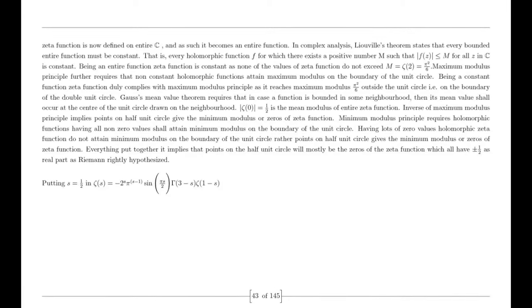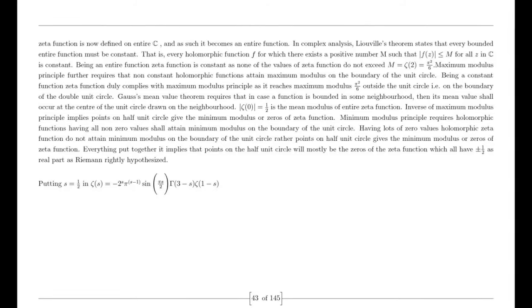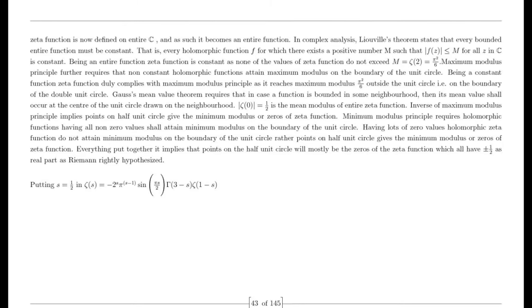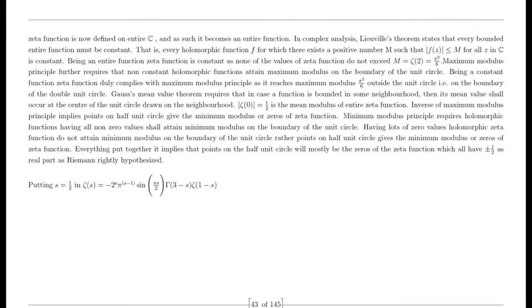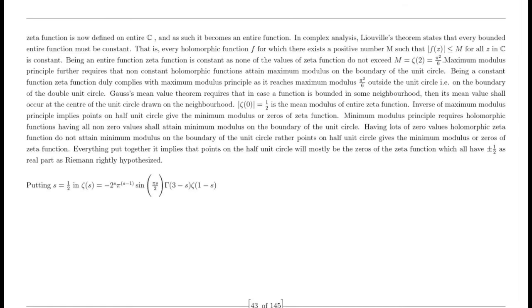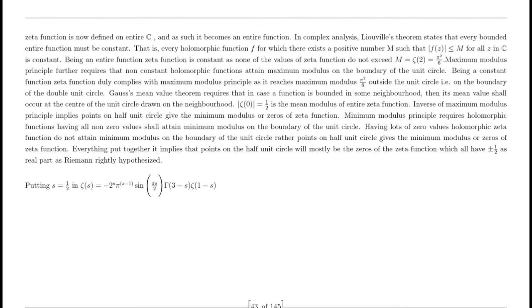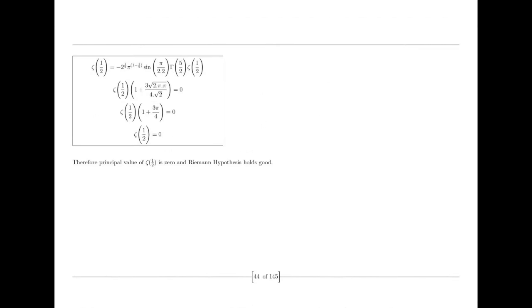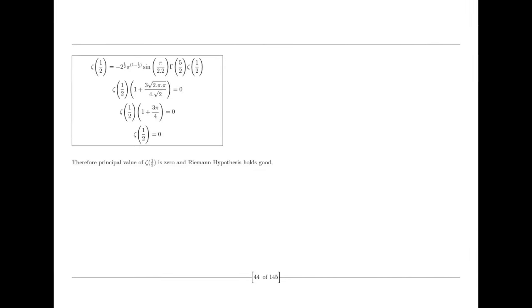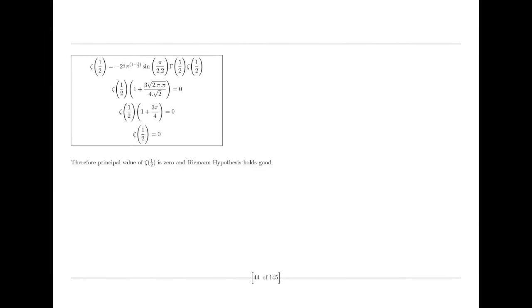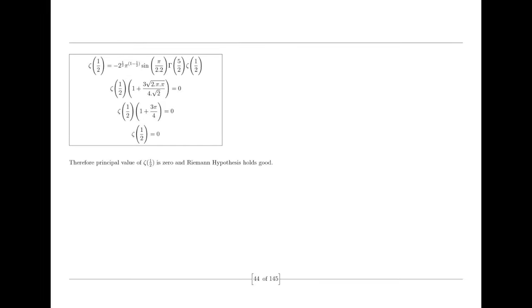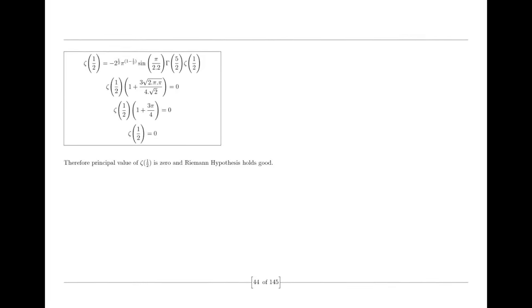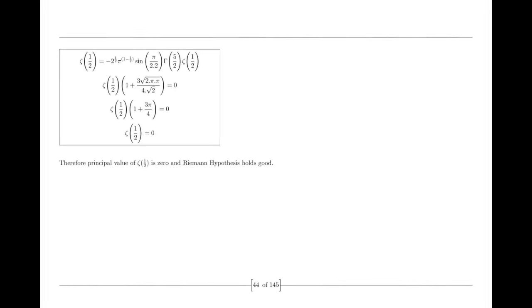Moreover, the integration of imaginary numbers with the real number line could have implications for quantum error correction codes, which protect quantum information from decoherence and errors. The mathematical framework underlying error correction codes would likely continue to rely on complex numbers, ensuring the reliable storage and manipulation of quantum information. The unification of real and imaginary numbers would foster interdisciplinary collaborations and cross-pollination of ideas across all branches of science. It would encourage researchers to explore new mathematical frameworks and develop novel approaches to understanding complex phenomena.